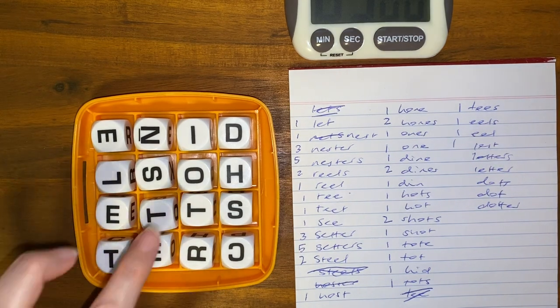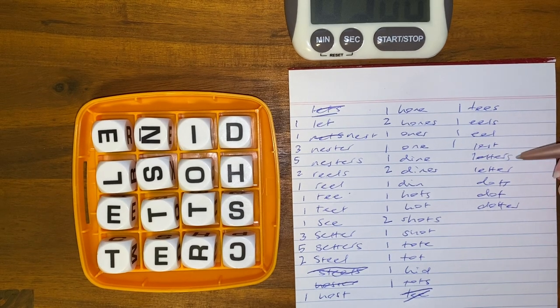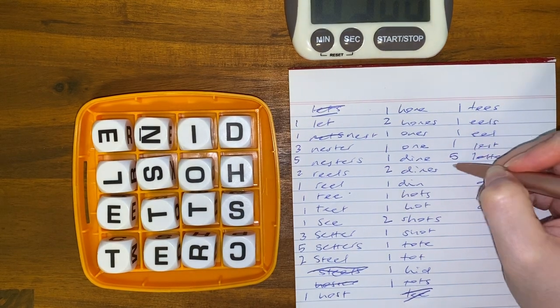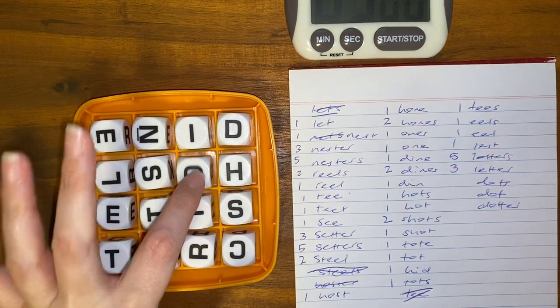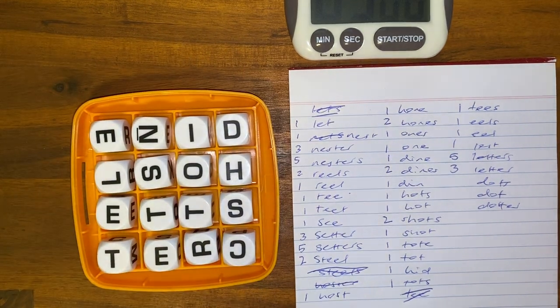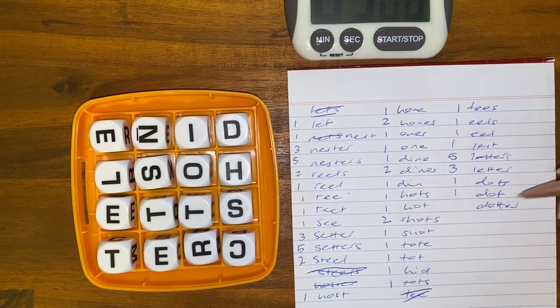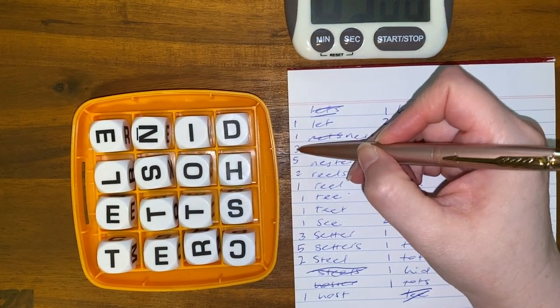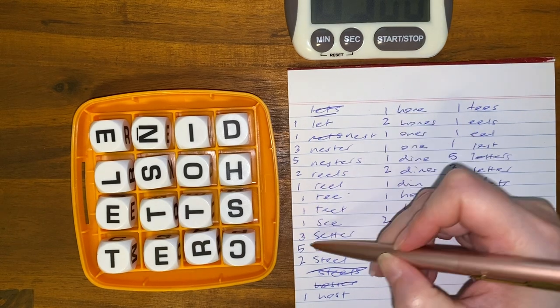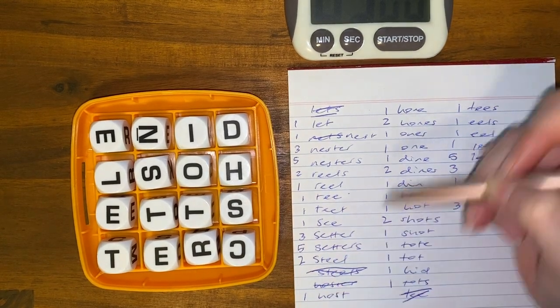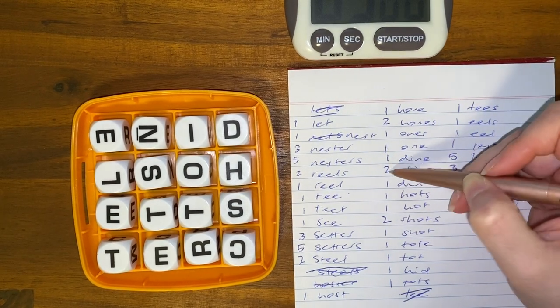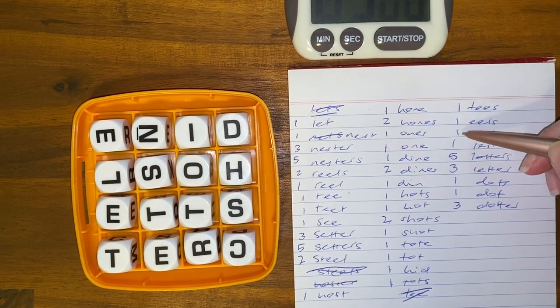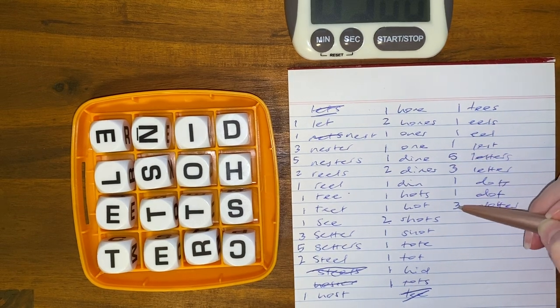Din, hots and hot, and then I had shot and shots, so that's two, tote, tot, tots, I had hid. Now T, I feel like I had already, I did, I had it up here so it doesn't count. Tees as in golf tees, I had eels and eel, lest as in lest we forget. Then I had letters as well as letter, so two, four, six, seven, so five points for a seven letter word. Then I had dots, dot, and dotter. I ran out of time to get dotters. Calculating: that's two, five, ten, twelve, thirteen, fourteen, fifteen, sixteen, nineteen, twenty-four, twenty-six, twenty-seven, twenty-eight, thirty, thirty-two, thirty-three, thirty-five, thirty-eight, forty, forty-five, forty-nine, fifty-four, fifty-seven, sixty-two.